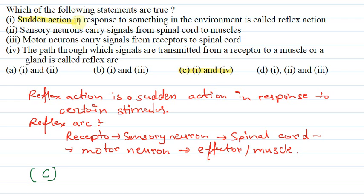First statement is: sudden action in response to something in the environment is called reflex action. And fourth is: the path through which signals are transmitted from receptor to a muscle or a gland is called reflex arc. So that's all the explanation to this question. Thank you.